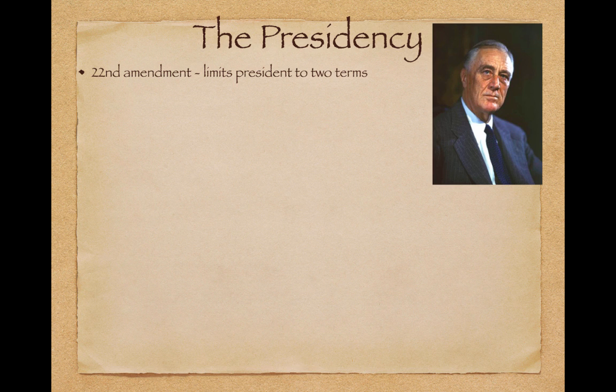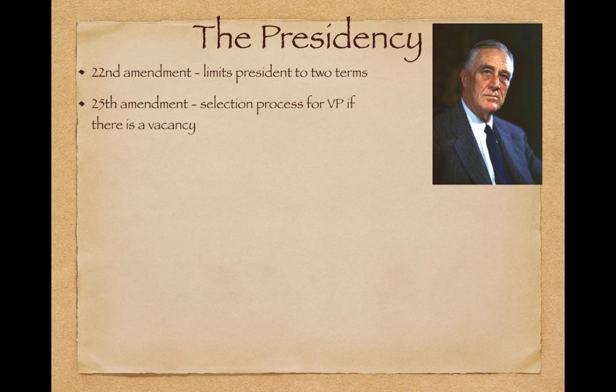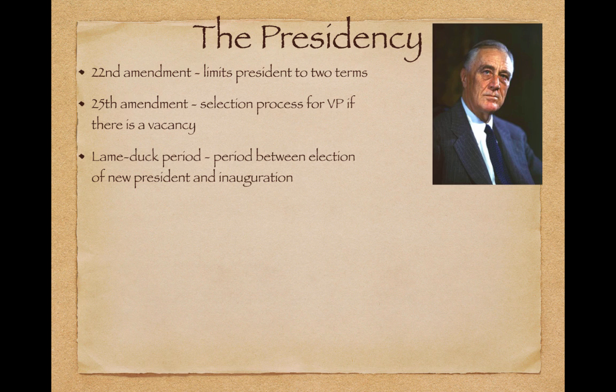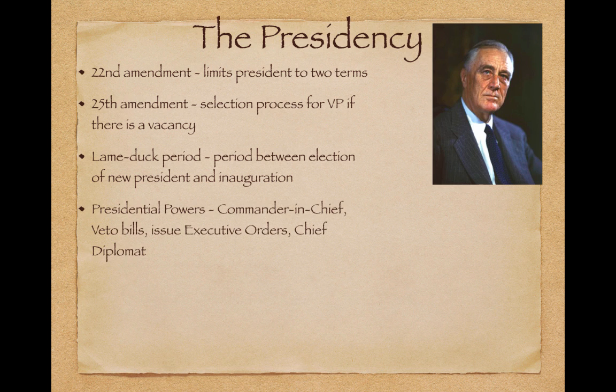Moving to the presidency: the 22nd Amendment limits the president to two terms — I always think of this as 'two term, 22.' FDR is the only one elected more than twice; he was elected four times. The 25th Amendment is the selection process for the Vice President if there is a vacancy — the president picks a VP who must then be approved. The lame duck period is the period between the election of a new president and inauguration — for example, the most recent lame duck period was from November 2016 to January 2017, when Obama was still in office but Trump had been elected.